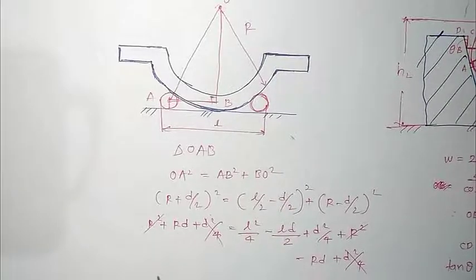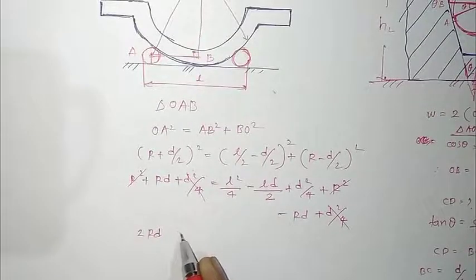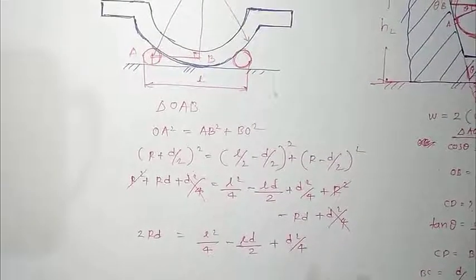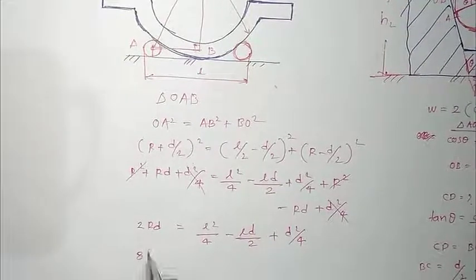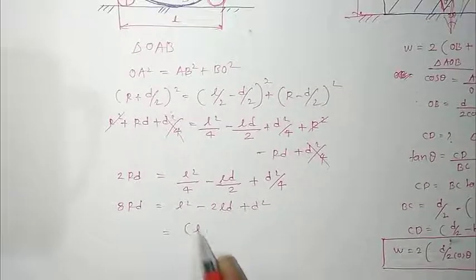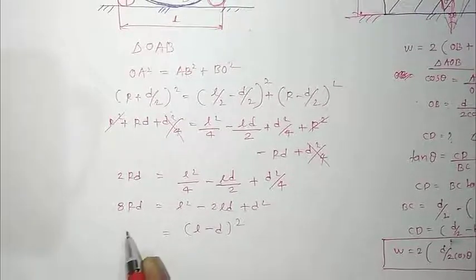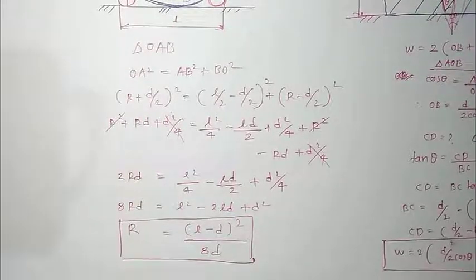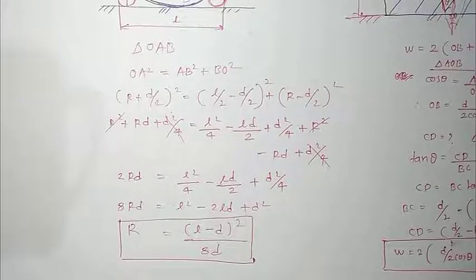So 2Rd = L²/4 − Ld/2 + d²/4. Multiplying both sides by 4: 8Rd = L² − 2Ld + d², which is the expansion of (L − d)². Therefore, R = (L − d)² / (8d). This is the equation derived which gives the convex radius R of a convex part using simple instruments like a sphere and a micrometer.